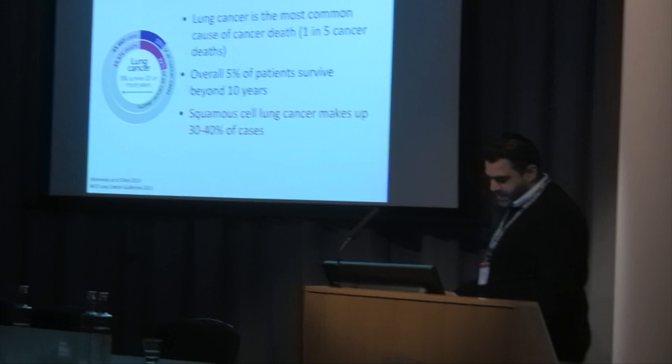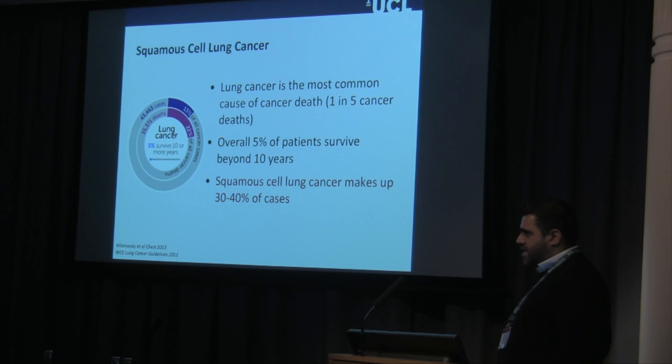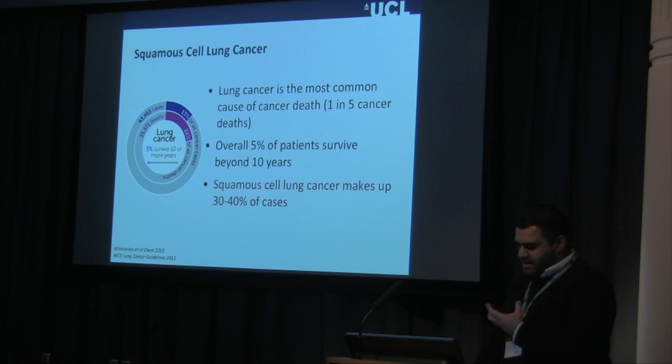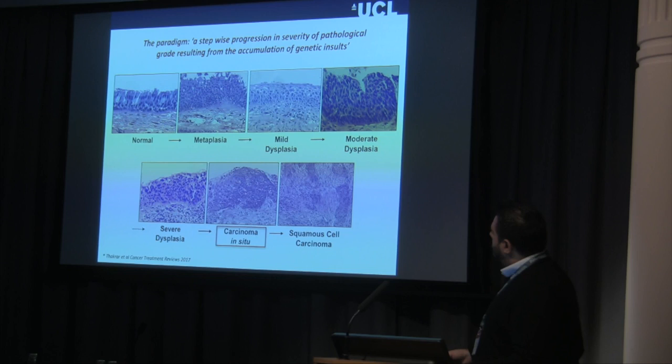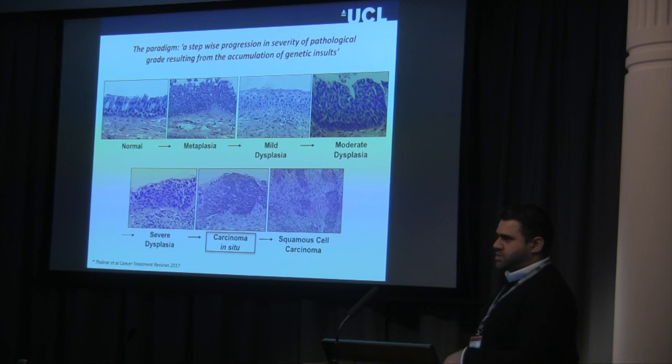Lung cancer is the most common cause of cancer death, and surgical resection is the curative option. There are modalities such as radical radiotherapy, but patients present far too late. The squamous cell cancers occur in the central airways, and it's widely accepted that squamous cell lung cancers occur through worsening cytological and morphological aberration as the epithelium changes from normal to dysplastic and then to carcinoma in situ.